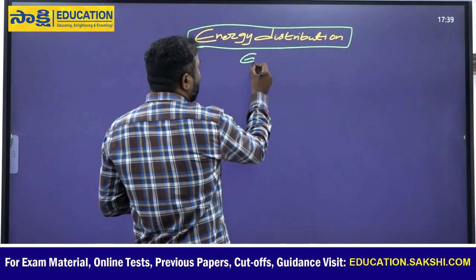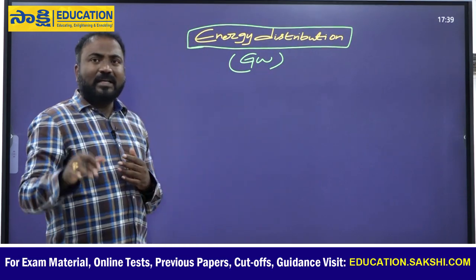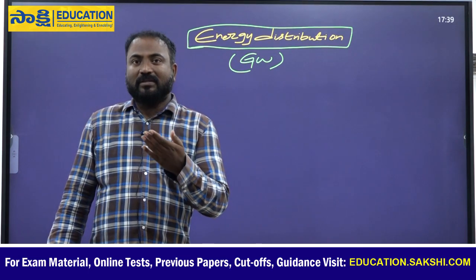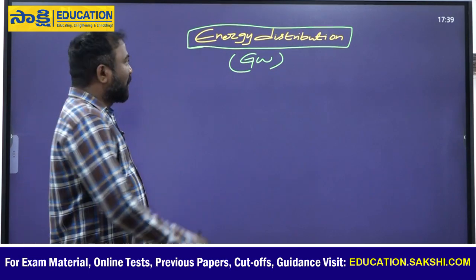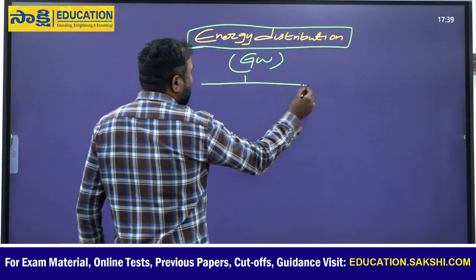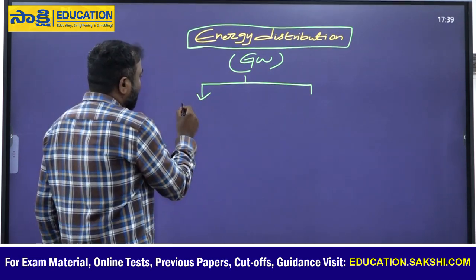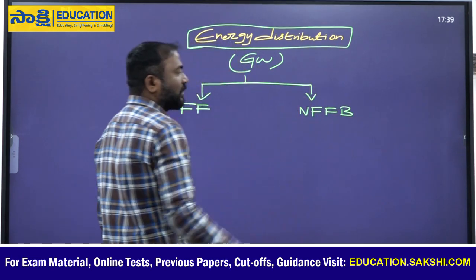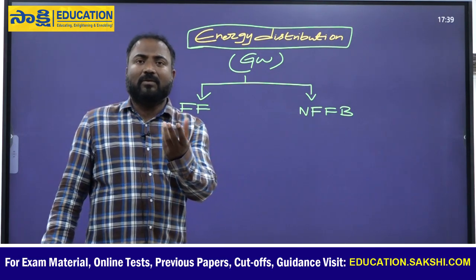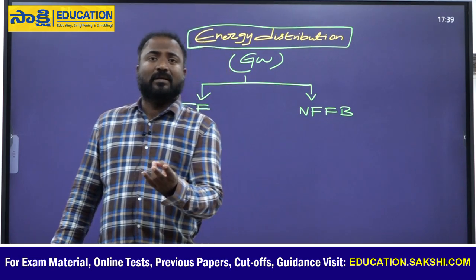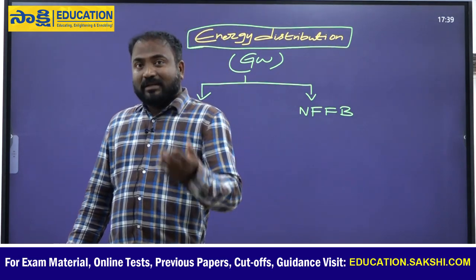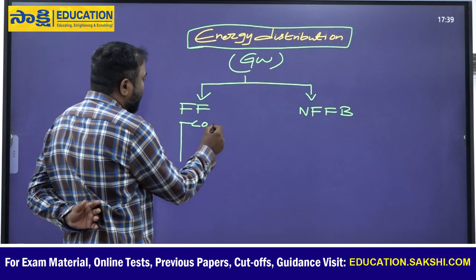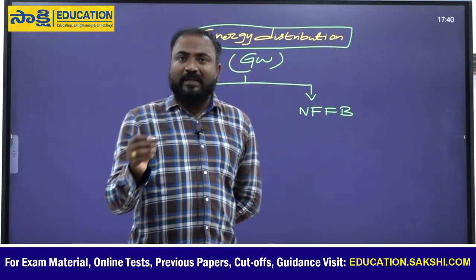To express power, we generally use watts physically, and for large-scale power we use gigawatts. India's total installed energy capacity is expressed in gigawatts. The energy distribution can be broadly classified into fossil fuels and non-fossil fuel based energy resources. Fossil fuels include coal, crude oil components like petroleum, diesel, LPG, and natural gas.